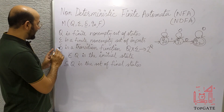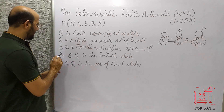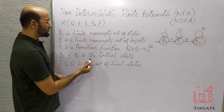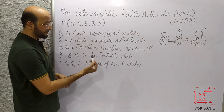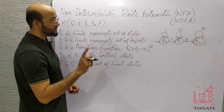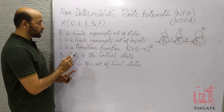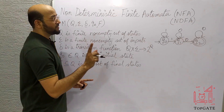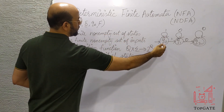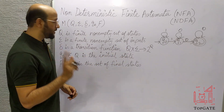Next, delta is a transition function that we will discuss in detail shortly. Then we have Q0, which belongs to Q — that is the initial state. In any NFA or DFA, we always have a single initial state. We can take any one of Q0, Q1, Q2 as the initial state, but it should be a single one.